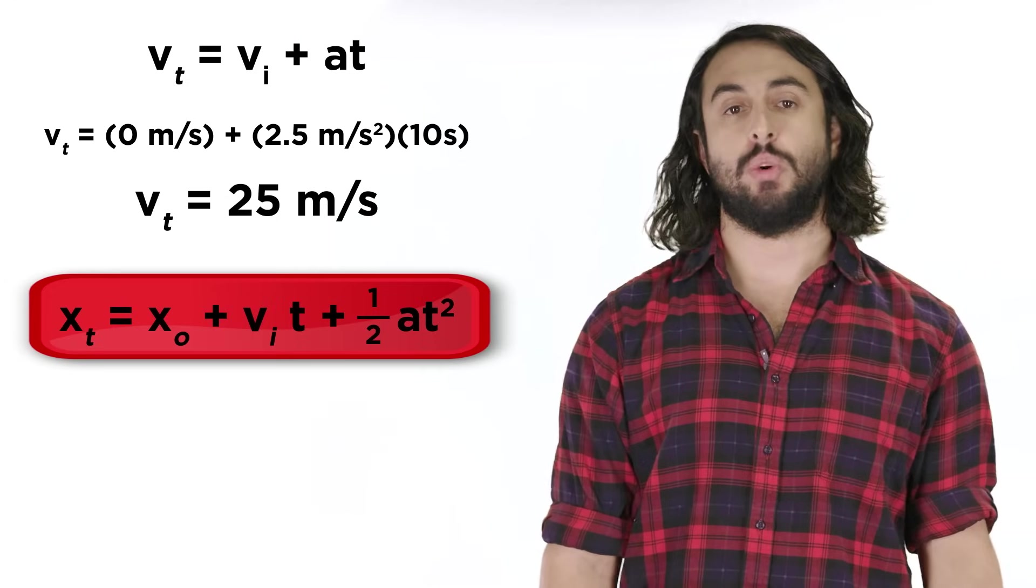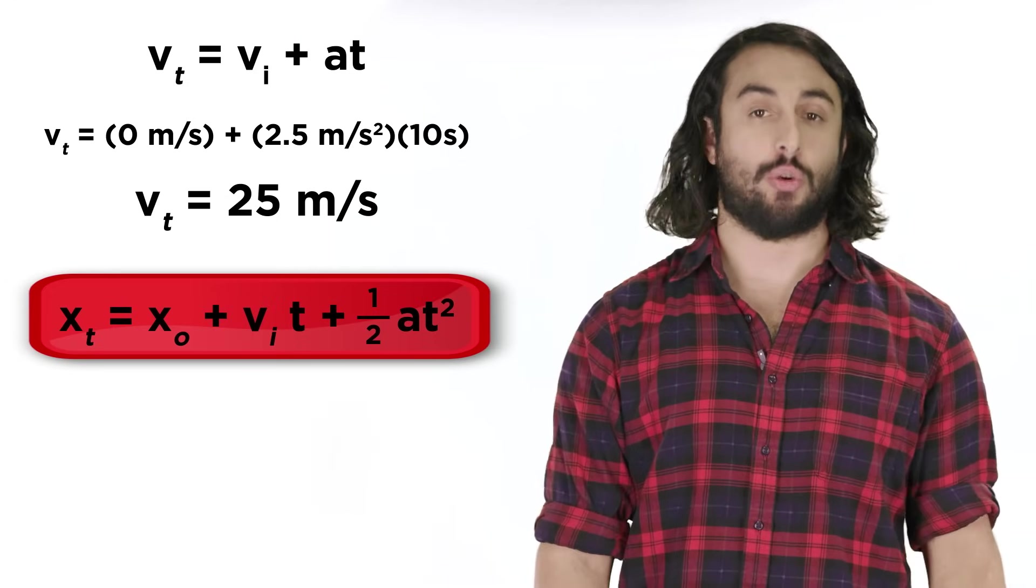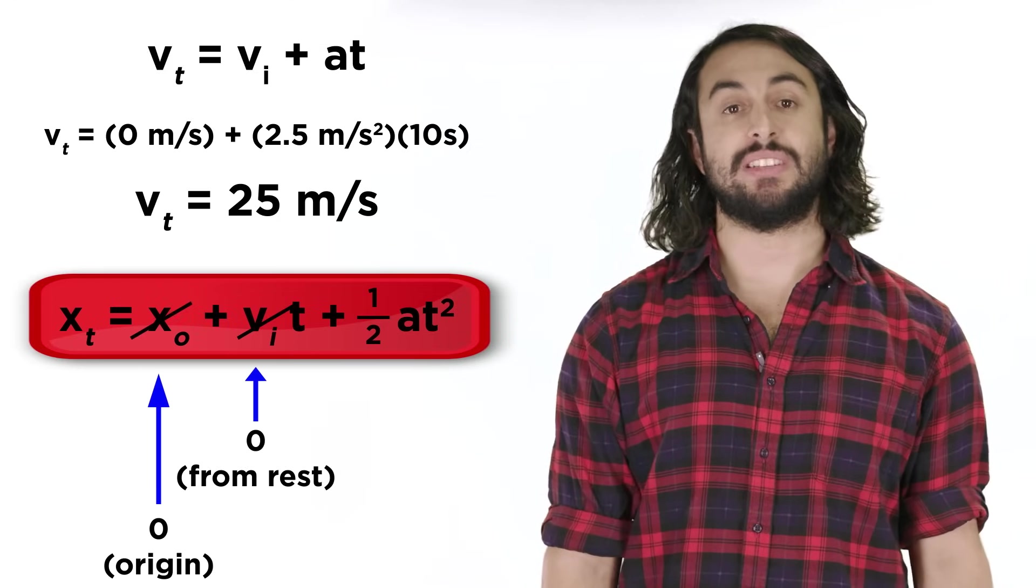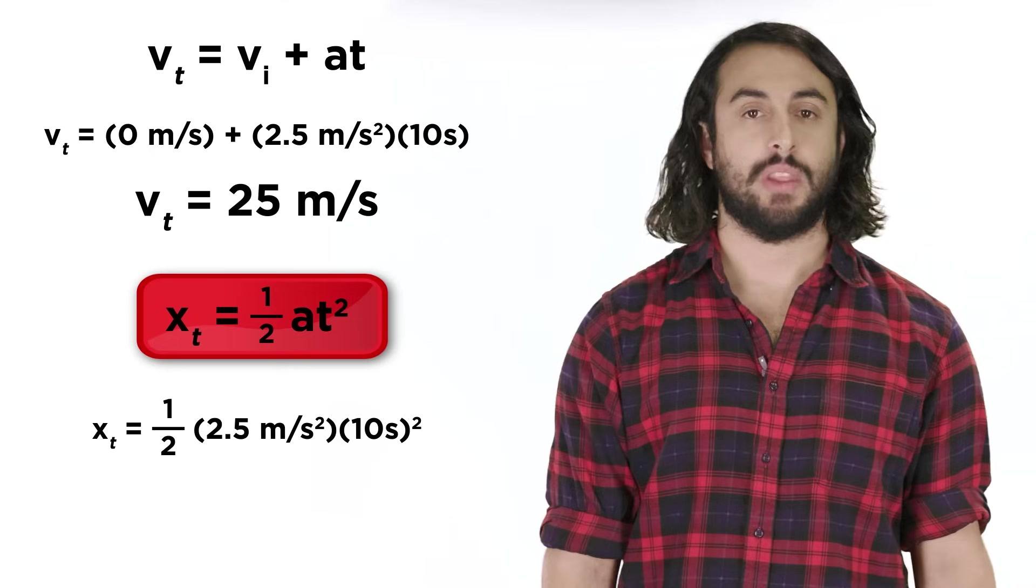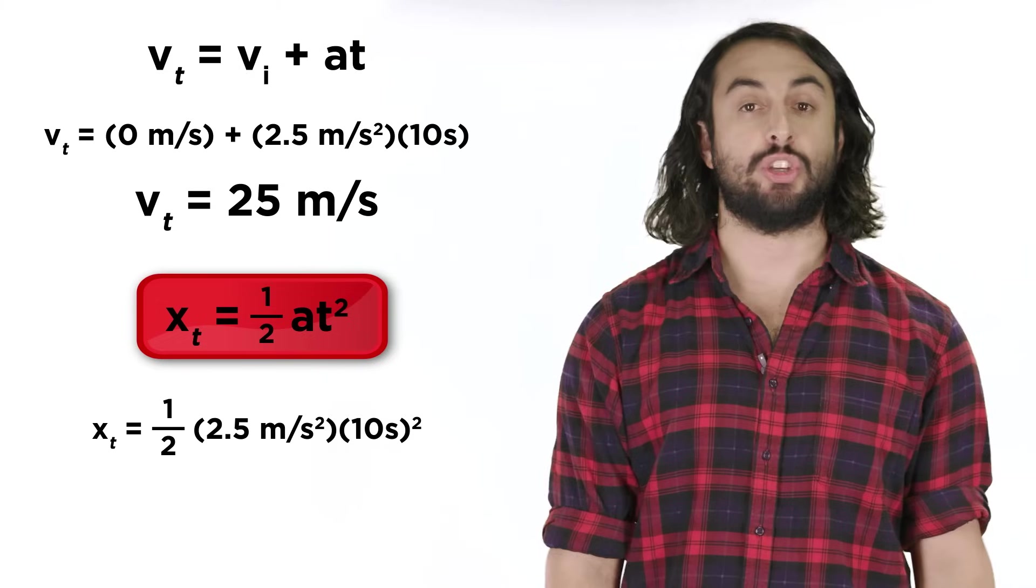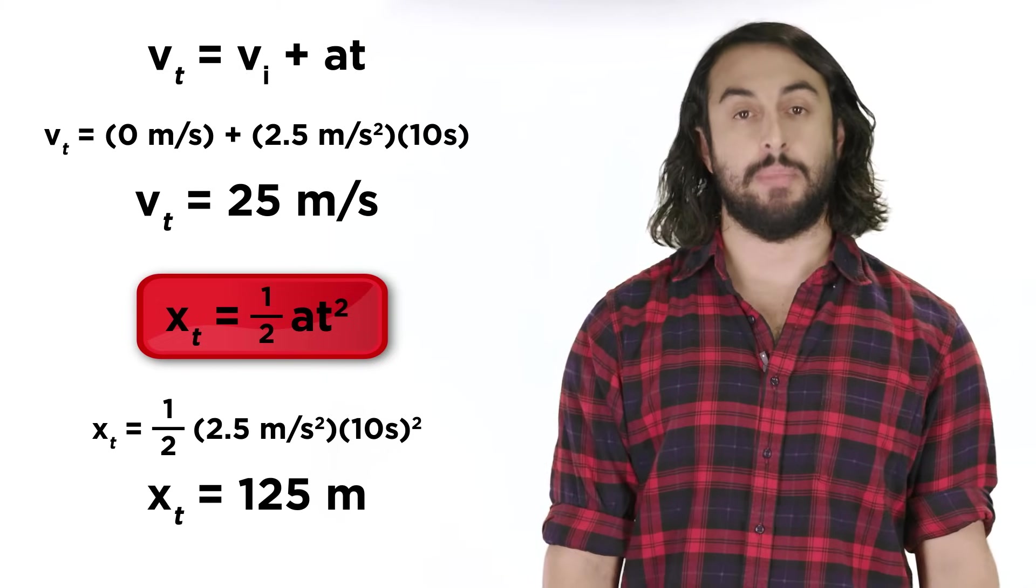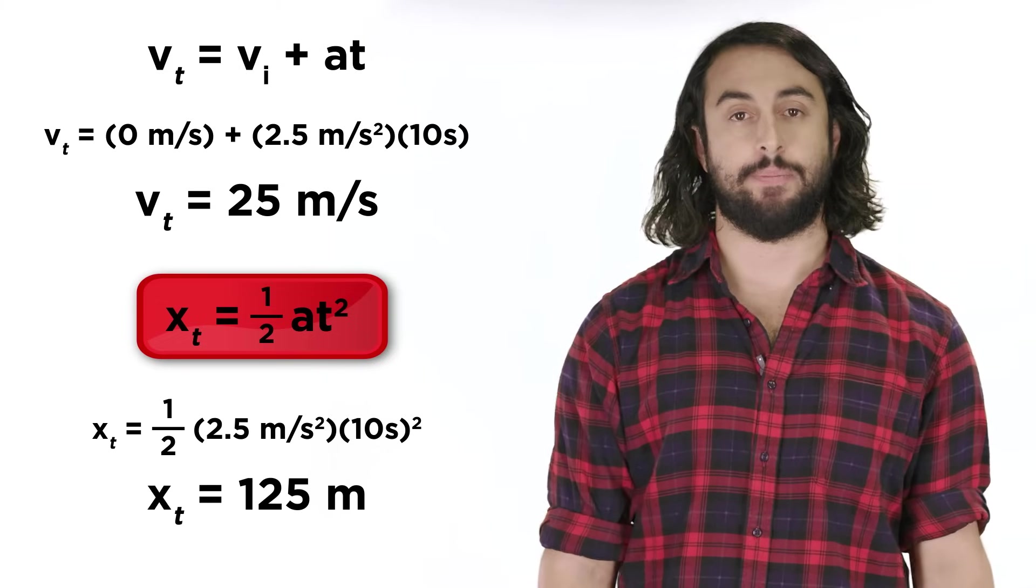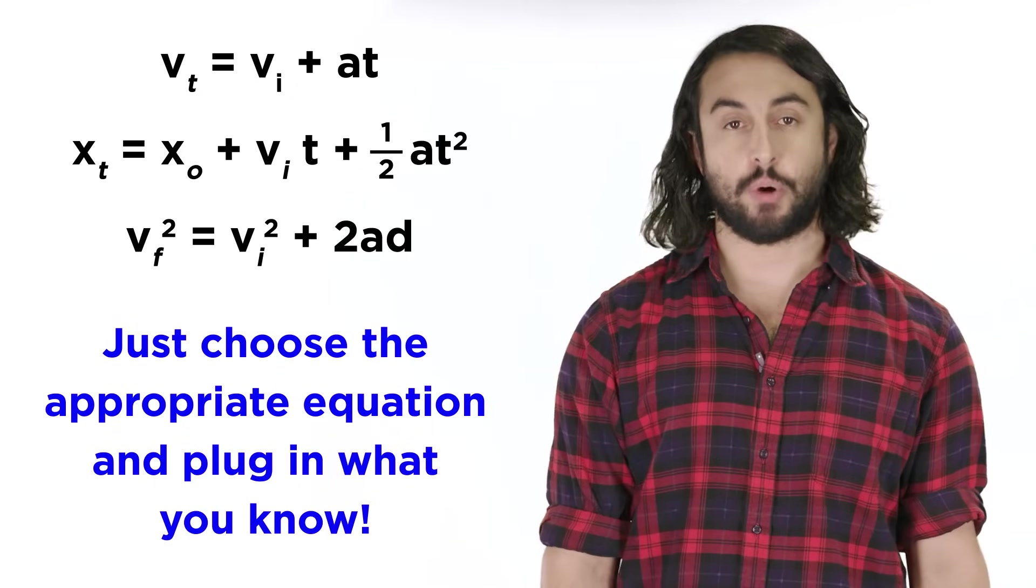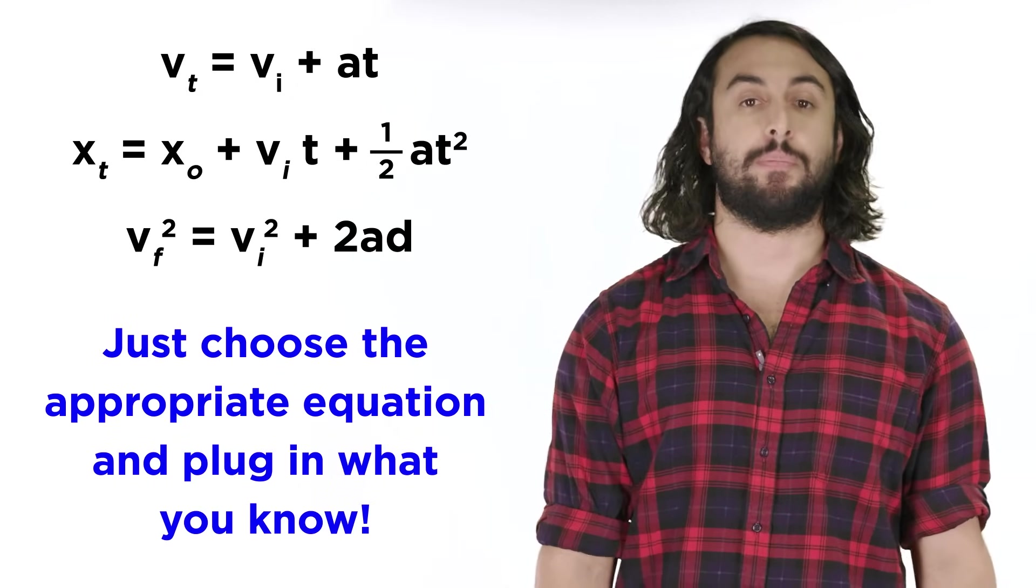Now to find how far you will have traveled, you will use this equation. Once again, initial velocity is zero, so this entire term can be ignored. Then we have one half times the acceleration times ten seconds squared, and we should get 125 meters traveled over this time span. So it really is this simple, you just choose the equation that is appropriate for what you are solving for, and plug in what you know.